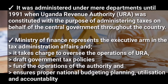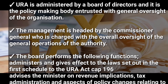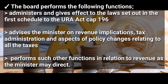URA, the Uganda Revenue Authority, is administered by a board of directors and is the policy-making body entrusted with the general oversight of the organization. The management is headed by the Commissioner General, who is charged with the overall oversight of the general operations of the authority. The board performs the following functions: it administers and gives effect to the laws set out in the first schedule of the URA Act, Cap 196; it advises the minister on revenue implications, tax administration, and aspects of policy changes relating to all taxes; and it performs such other functions in relation to revenue as the minister may direct.